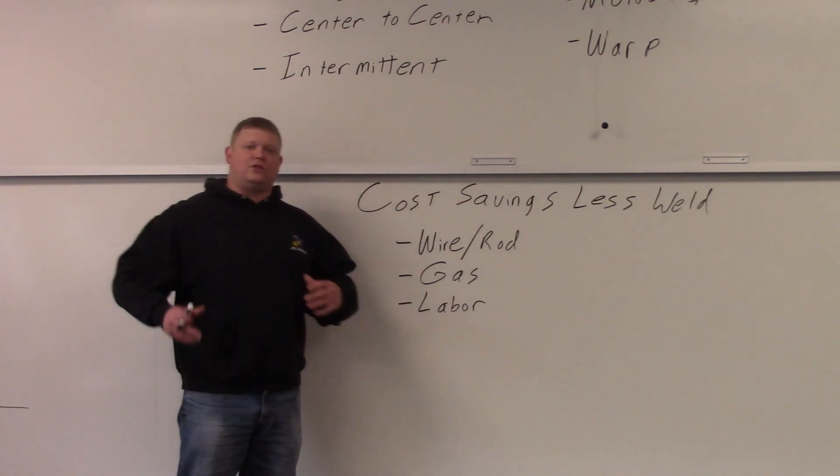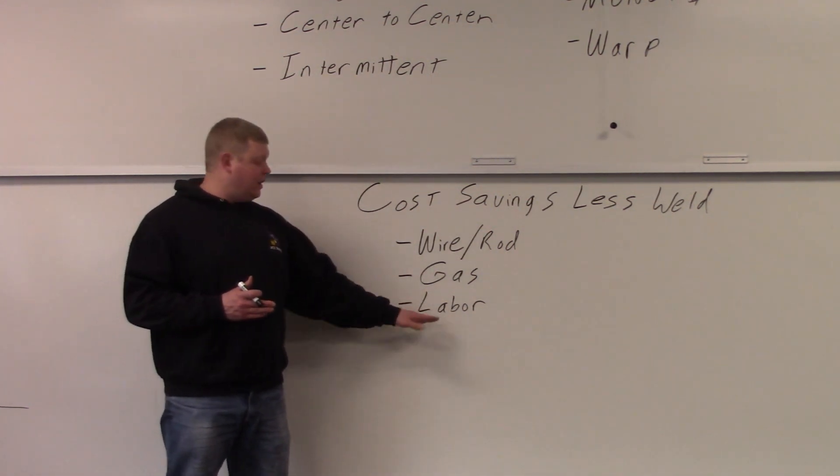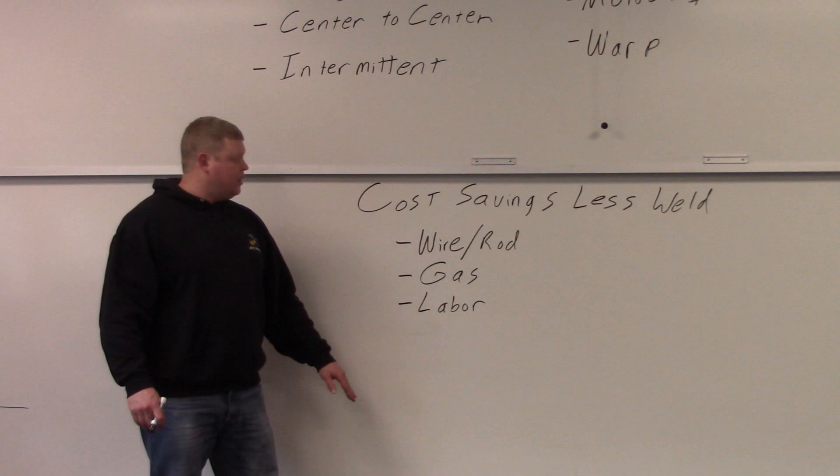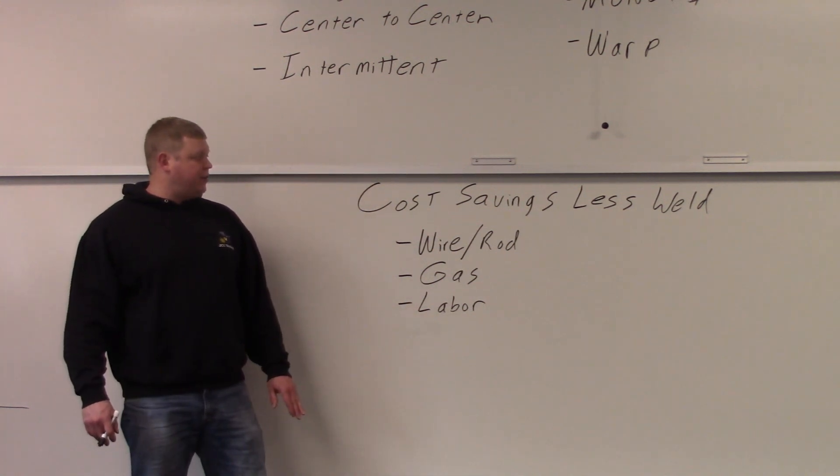You're not spending the money on the 75-25 or the argon, right? And the big one here is labor. You can move things through faster so you're not spending money paying the welder to do the actual full length of the weld. You stagger it. You're saving on all this right here. So I'm going to draw a couple of prints real quick on a staggered weld and an intermittent weld and we'll show you that here in a second.